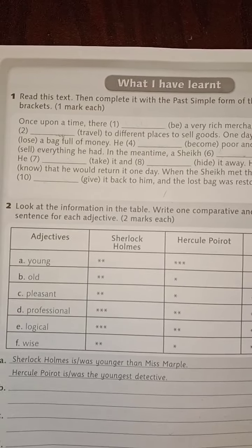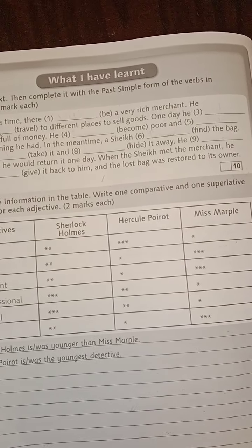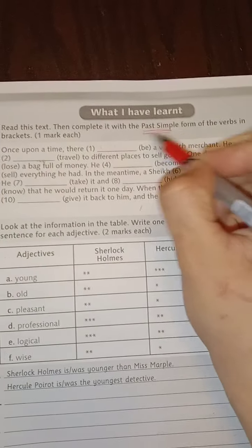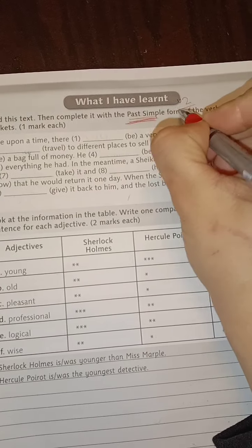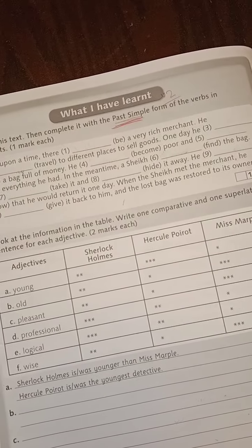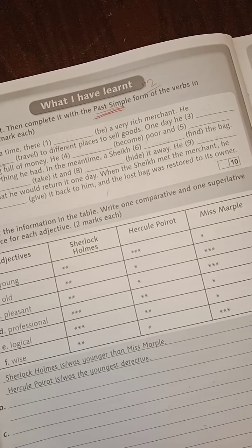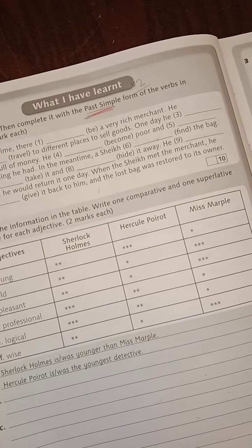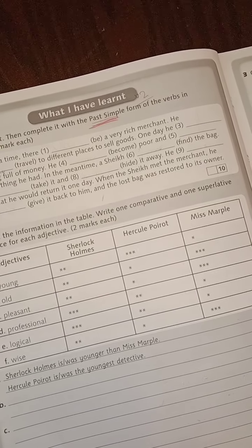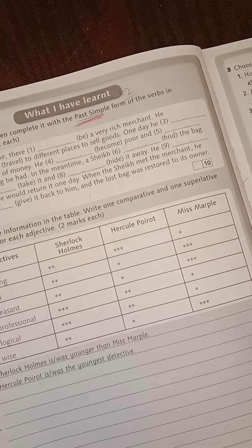So number one, read this text then complete it with the past simple form of the verbs in brackets. So past simple — ما هو الماضي البسيط؟ لهو الماضي البسيط, يعني الـ verb two. طبعاً إما regular verbs, أفعال منتظمة, so you have to add ed at the end of the verb بنضيف ed بنهاية الفعل مع إجراء بعض التغييرات as necessary. أو irregular verb اللي هو لازم يكون حافظينهم — you have to memorize them.